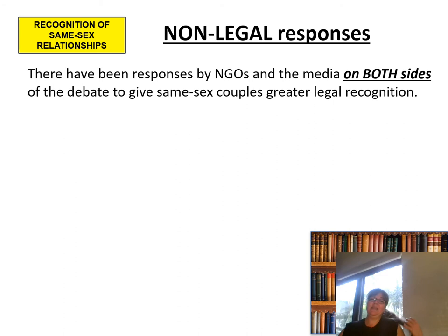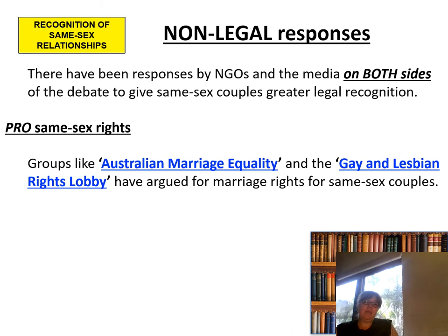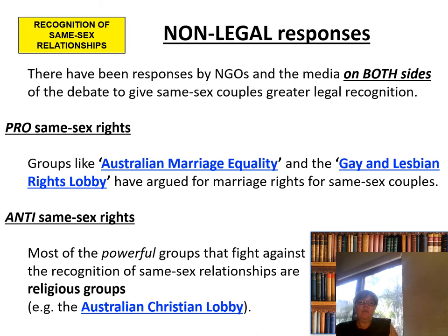Now let's look at non-legal responses. There have been responses by NGOs and the media on both sides of the debate. Pro-same-sex rights groups like Australian Marriage Equality and the Gay and Lesbian Rights Lobby have always argued for marriage rights for same-sex couples. Anti-same-sex rights groups — most of the powerful groups that fight against recognition of same-sex relationships — are religious groups, for example the Australian Christian Lobby.